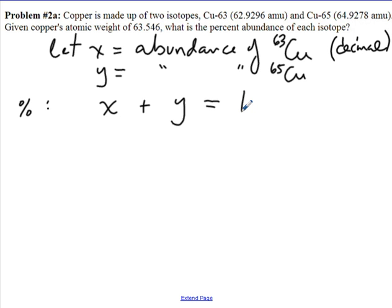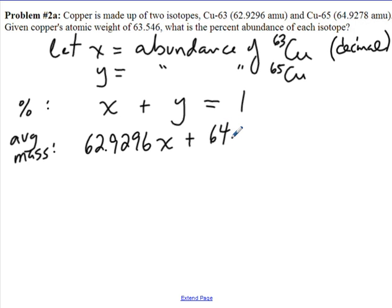The second equation is based on the average mass. This is a weighted average. To find a weighted average, we take the mass of the lighter isotope, 62.9296, and multiply that by the abundance of the lighter isotope, x, and we add the mass of the second isotope, 64.9278, multiplied by its abundance, y. Since that's all the isotopes we have together, that has to give the average mass, the weighted average, which was given in the question as 63.546 amu.